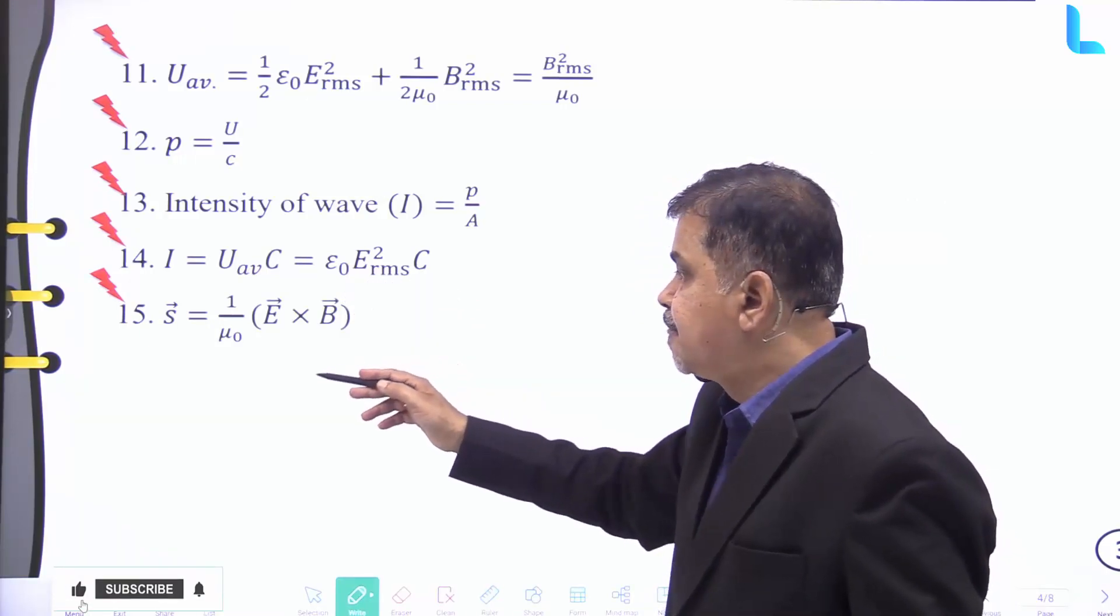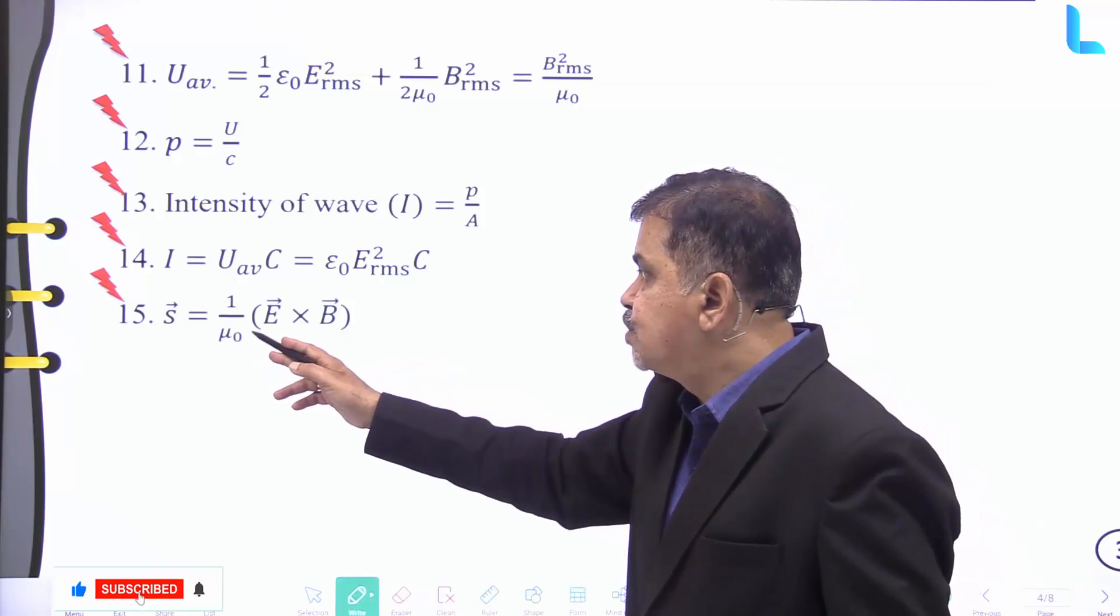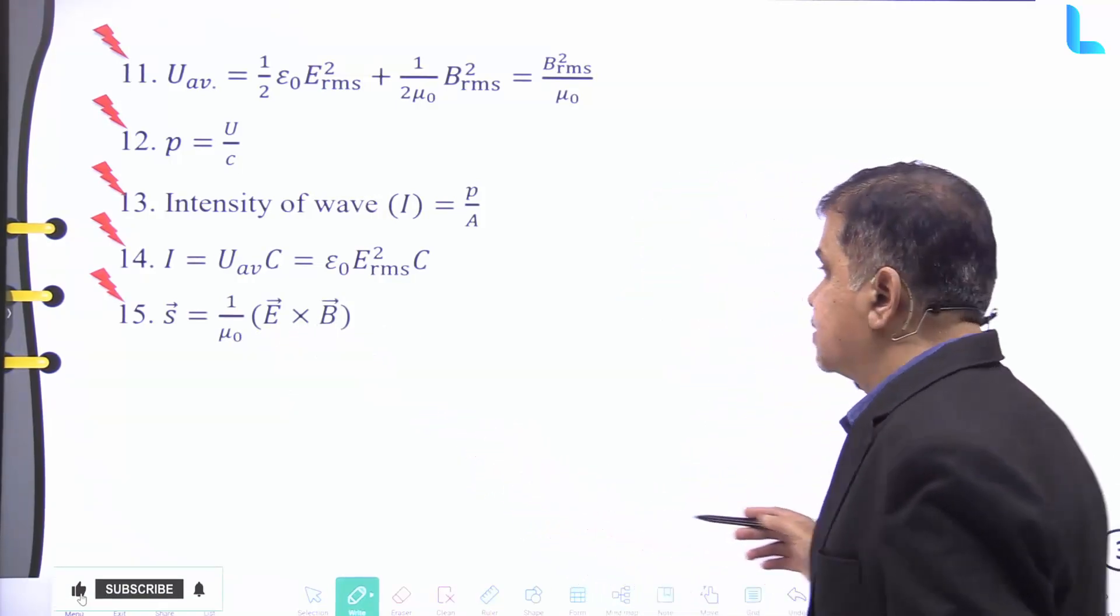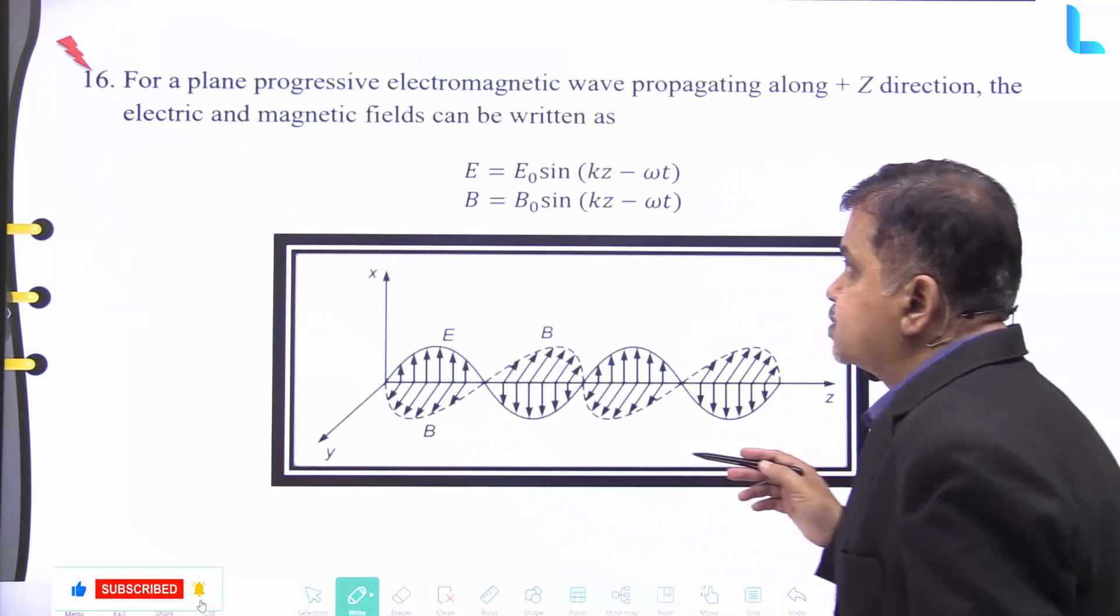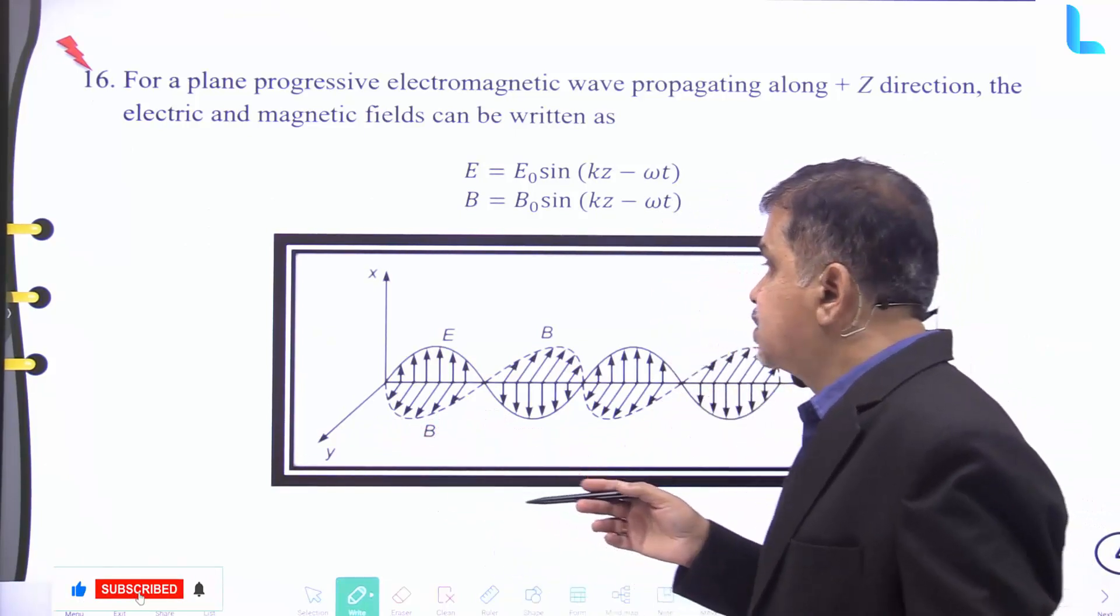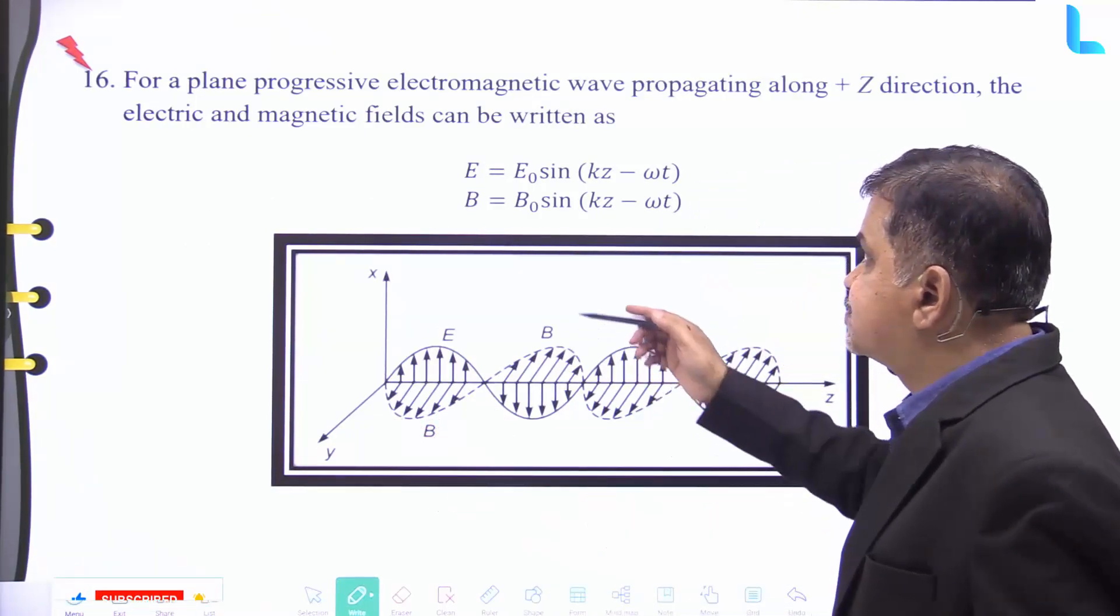And S vector is given by 1 by μ₀ into E vector into B vector. Thus we have seen certain important formulas at a glance.